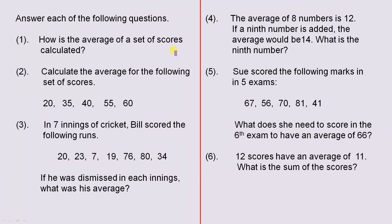The first question: how is the average of a set of scores calculated? This is the basic formula that we need. Once you have that, you'll be able to do these examples. Number two: calculate the average for the following set of scores. Here we have five scores and we need to calculate the average using the formula.